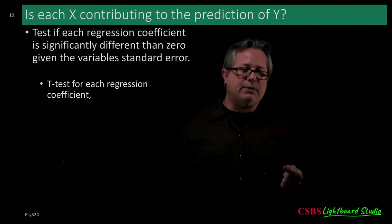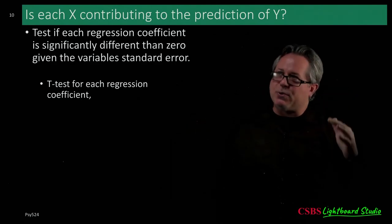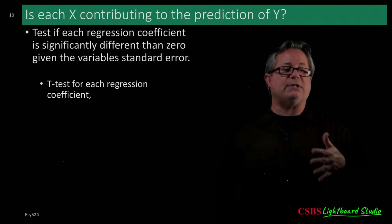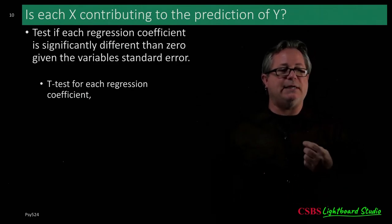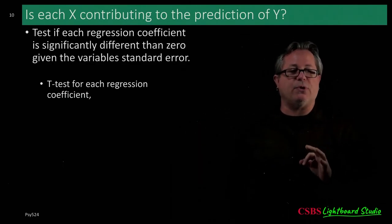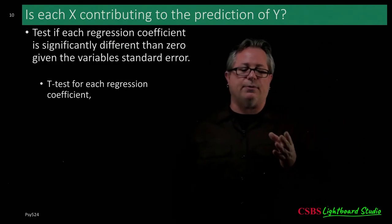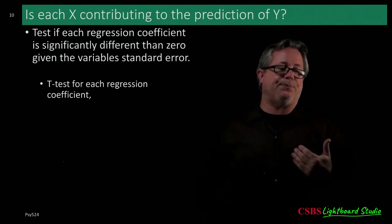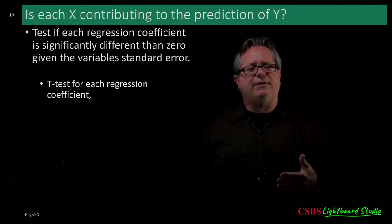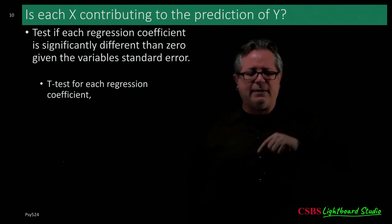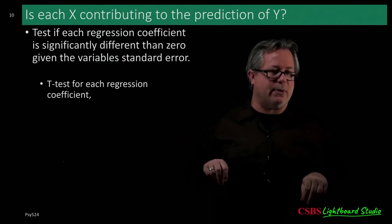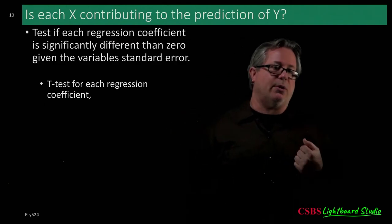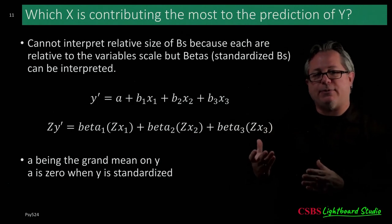We can also ask if each individual X is contributing significantly to the prediction of Y. For each regression coefficient, we compute a standard error, divide the coefficient by its standard error, and get a t-test. If significant, it tells you there is a relationship between that X and Y after controlling for all other variables in the model — a significant unique contribution to predicting the outcome.